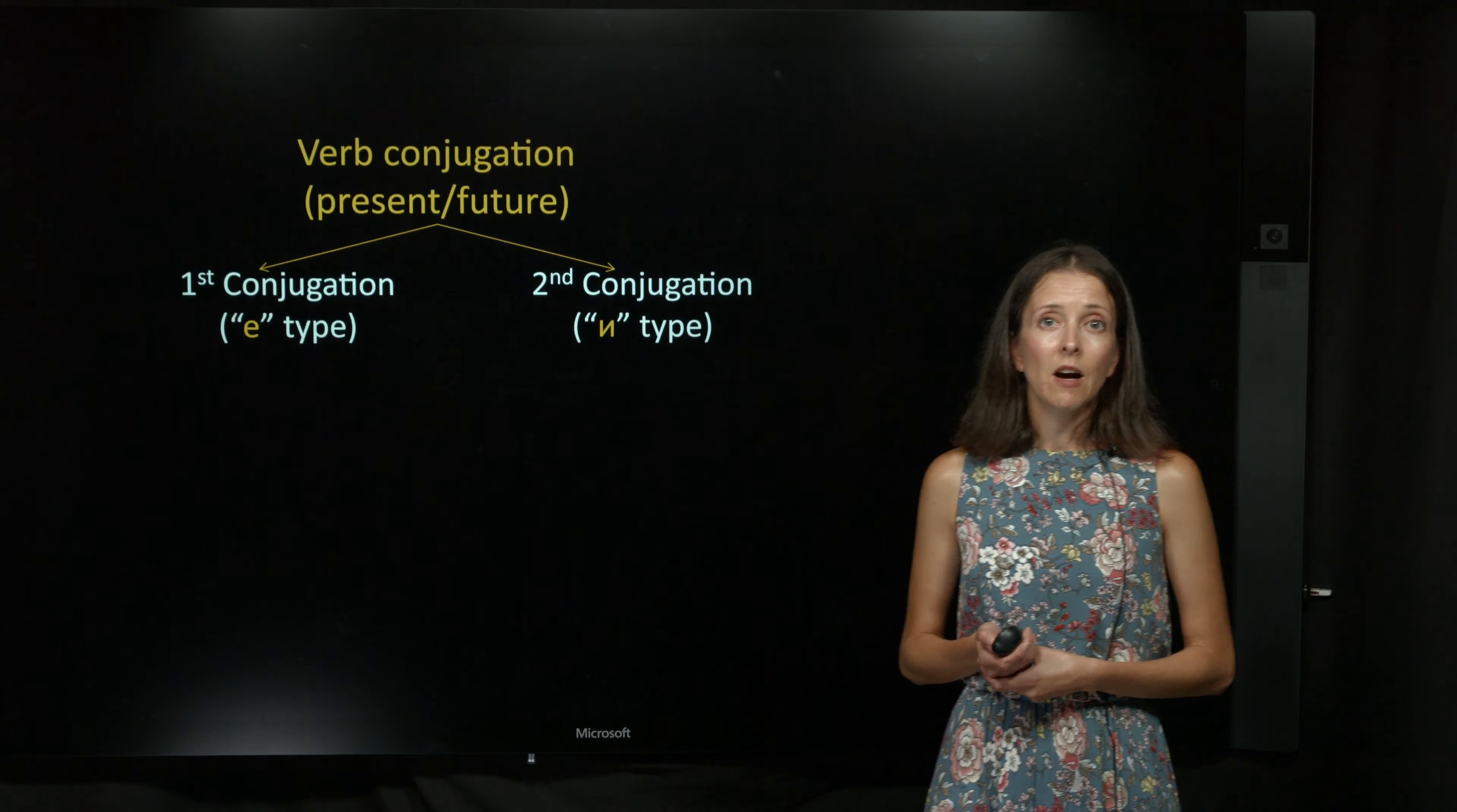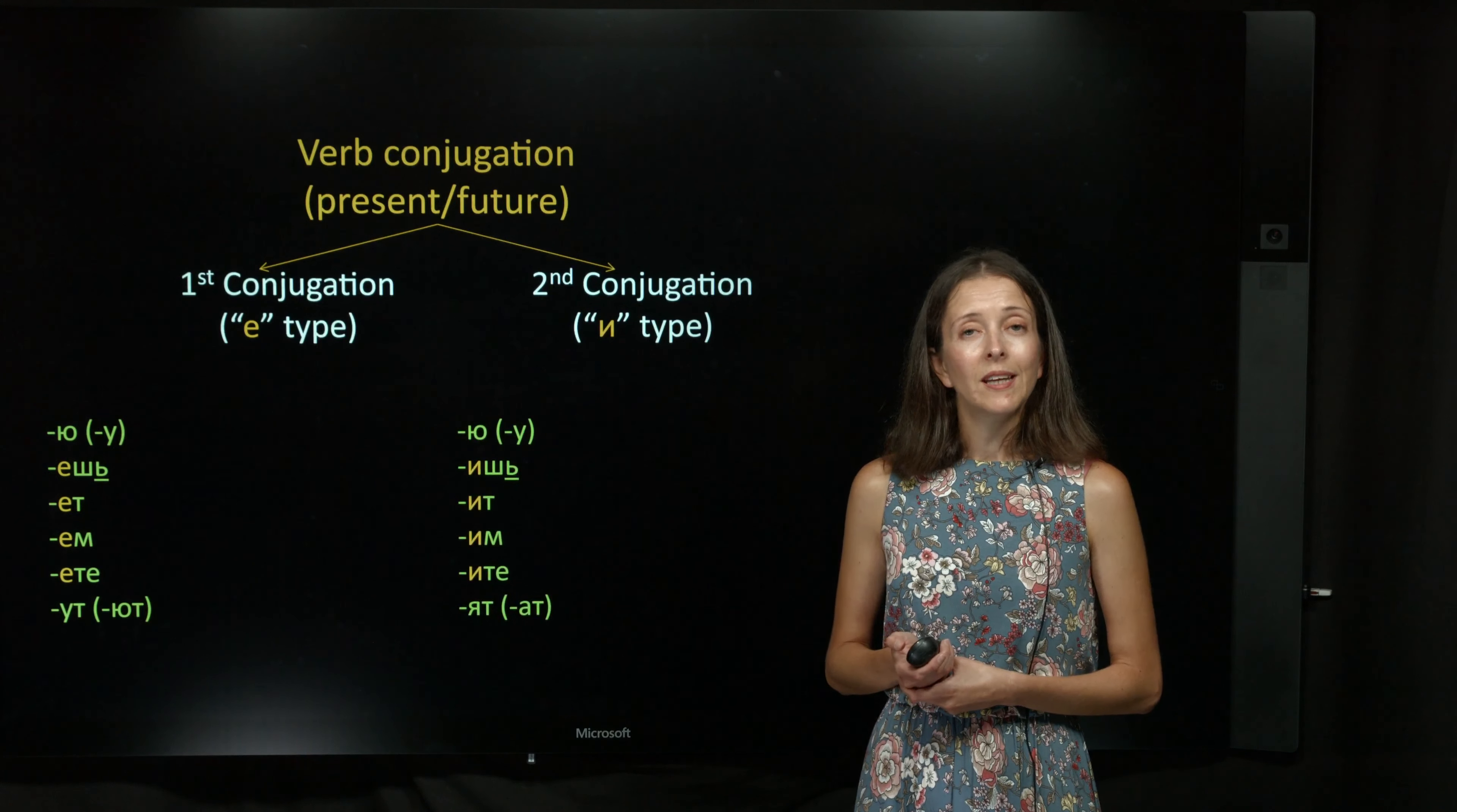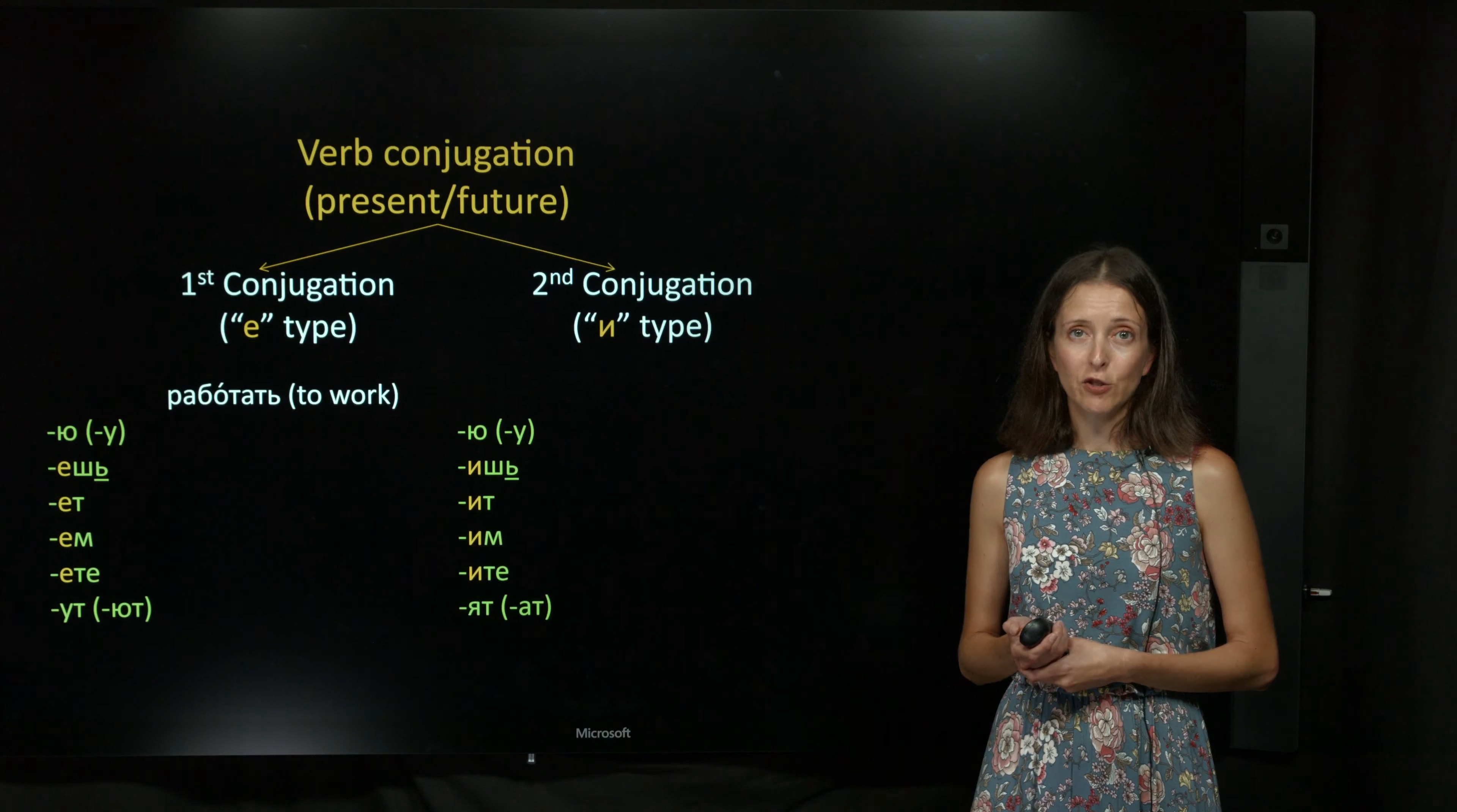First conjugation verbs are often known as E-type because of the letter E in four of its endings. Second conjugation verbs are called И-type because of the letter И in the same endings. The verb работать is the first conjugation verb.